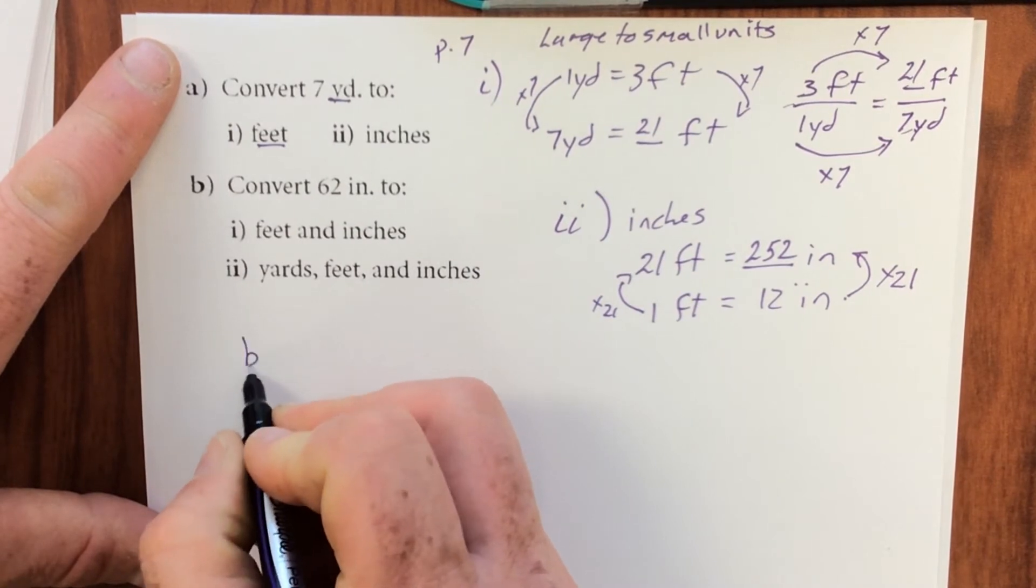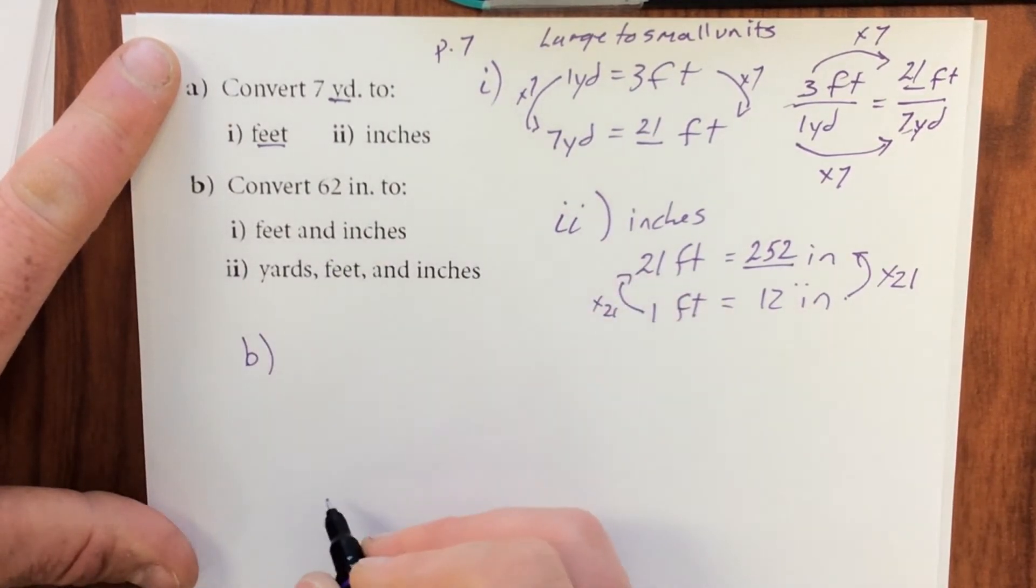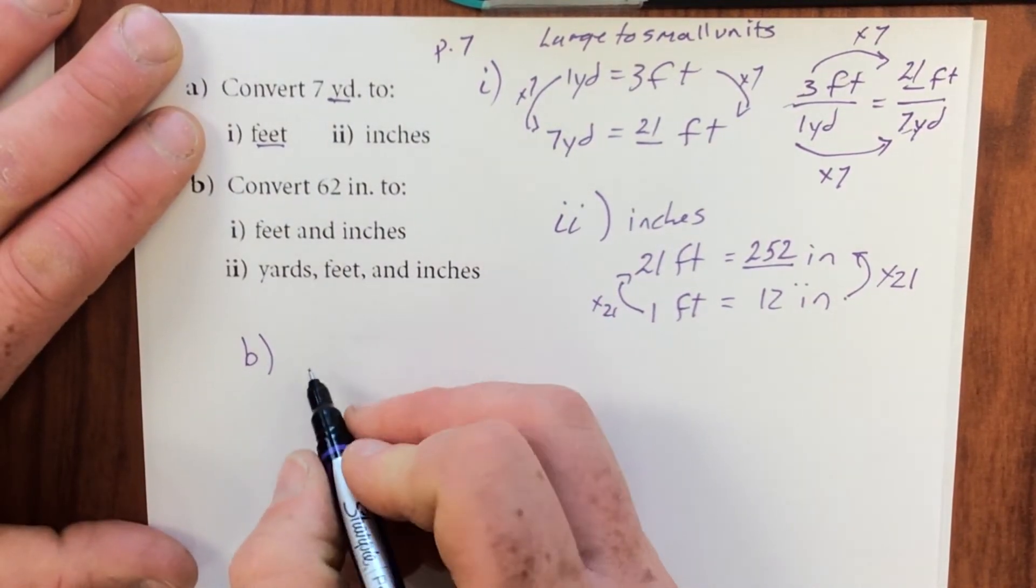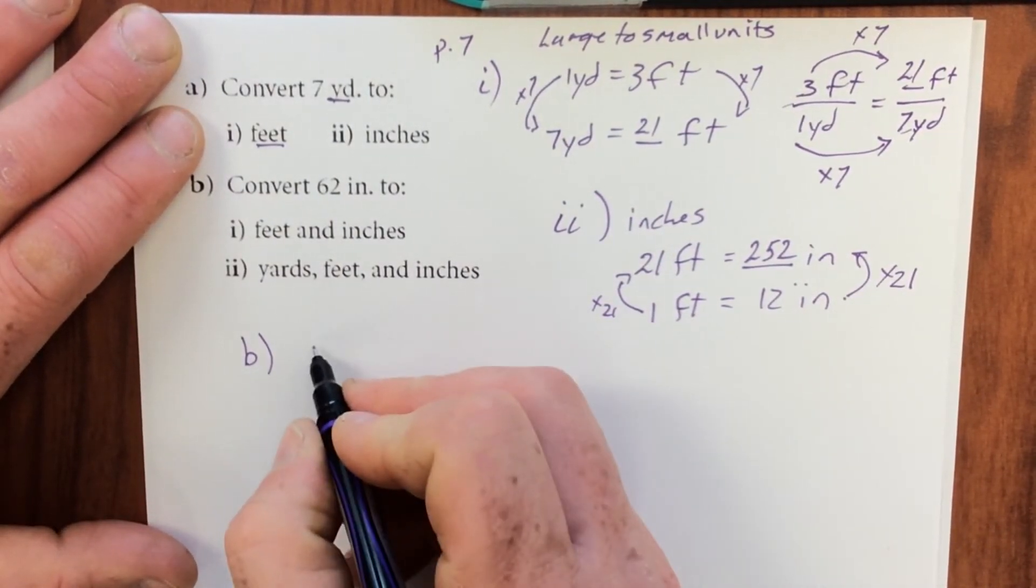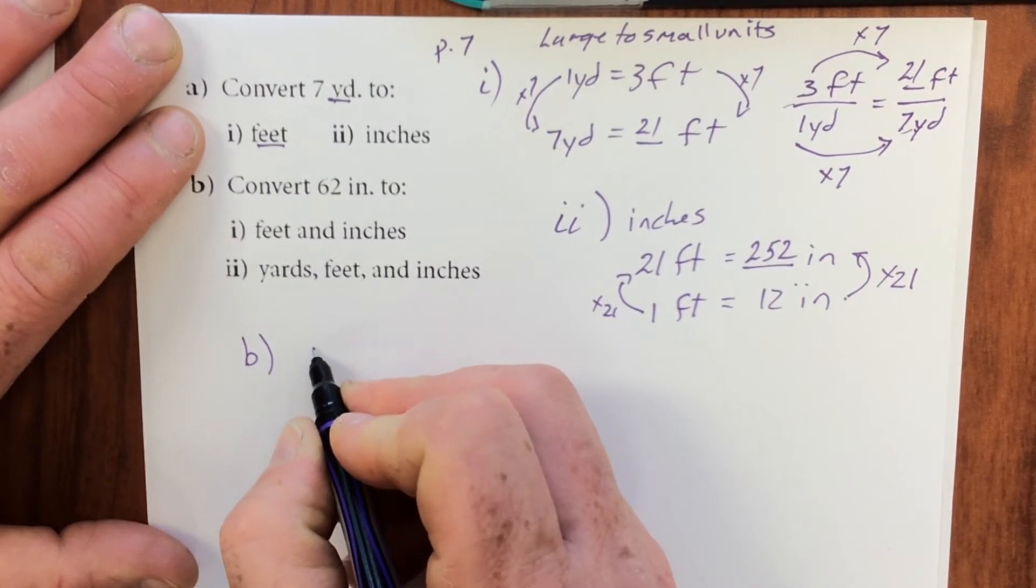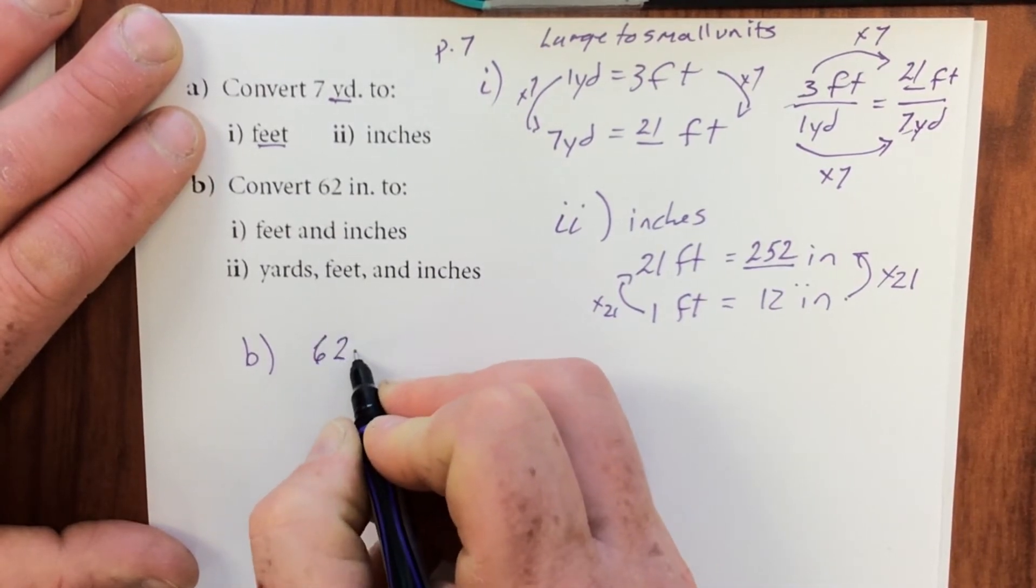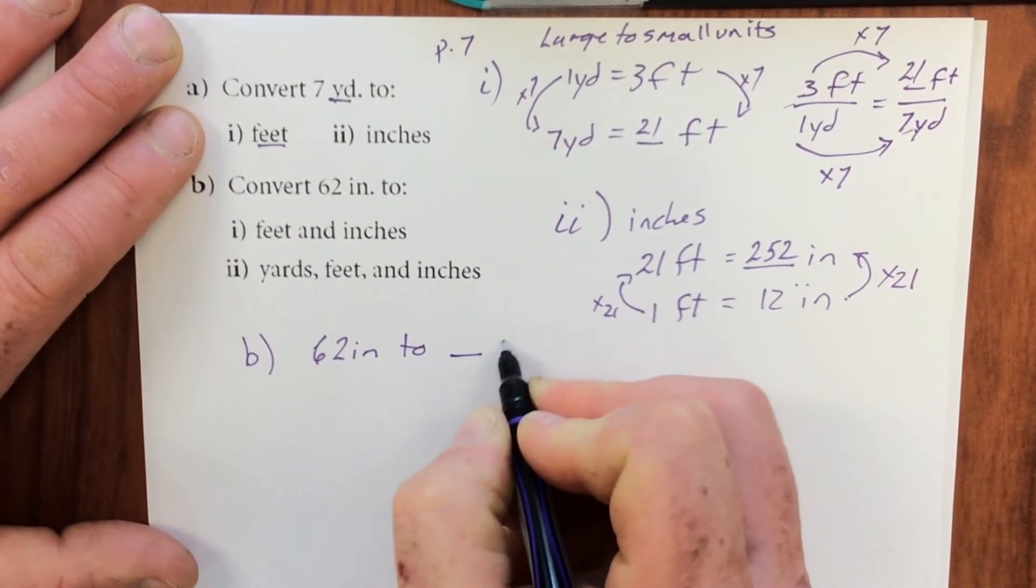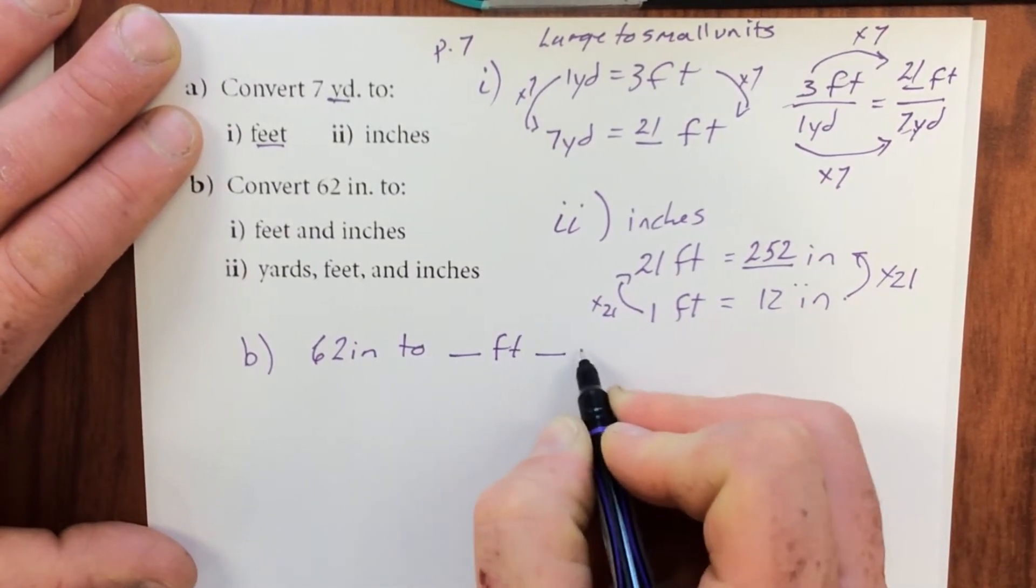Part B, convert 62 inches to feet and inches. There's a couple ways to do this. I'm going to do it the way I would do it first, and then I'll show you another way. 62 inches to blank feet, blank inches.